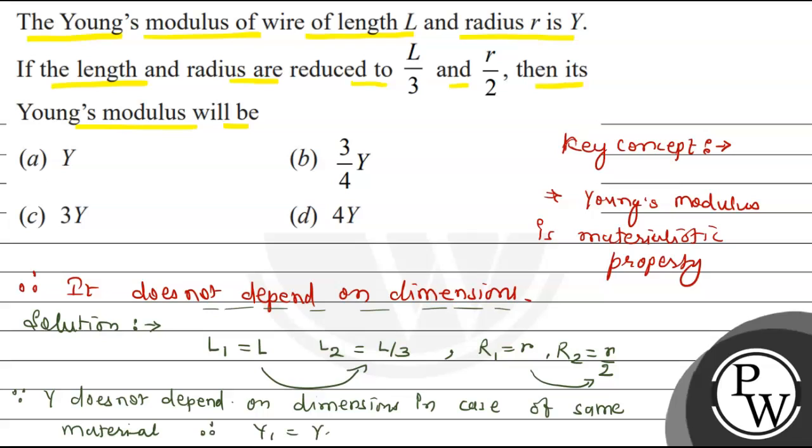Y1 equals to Y2 equals to Y. In the two cases the Young's modulus will be the same. If the first case is Y, then in the second case will be Y. Therefore option A is the right option. I hope you understood it well. Best of luck, thank you.